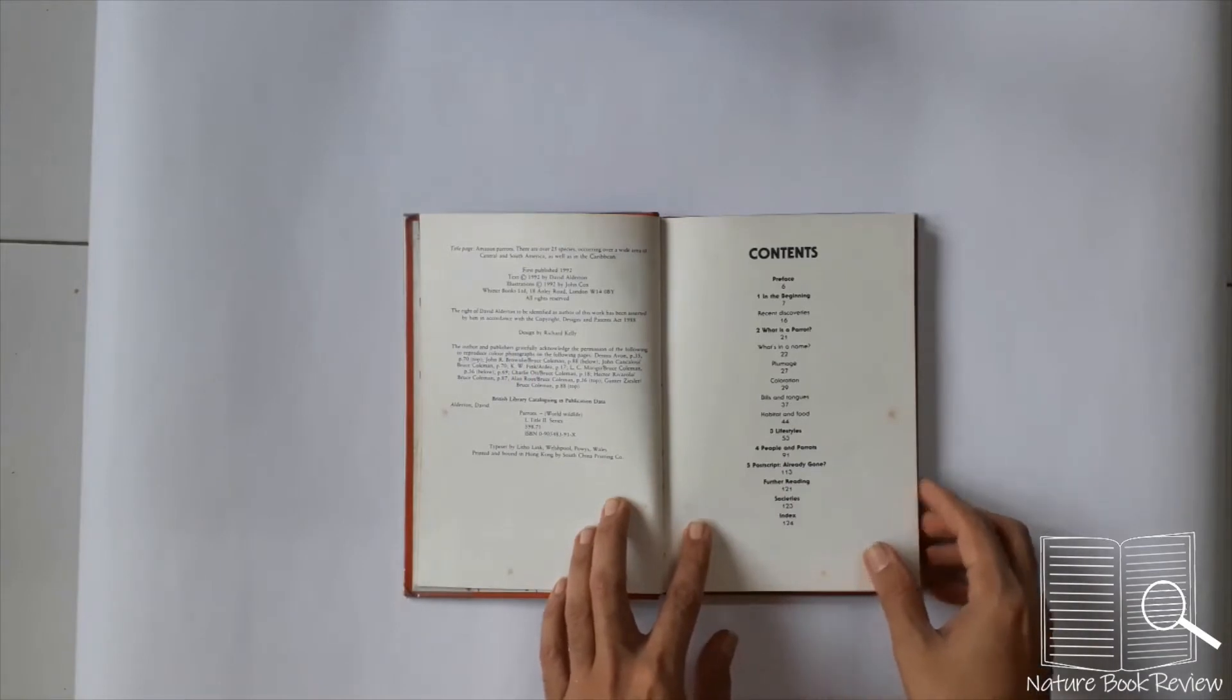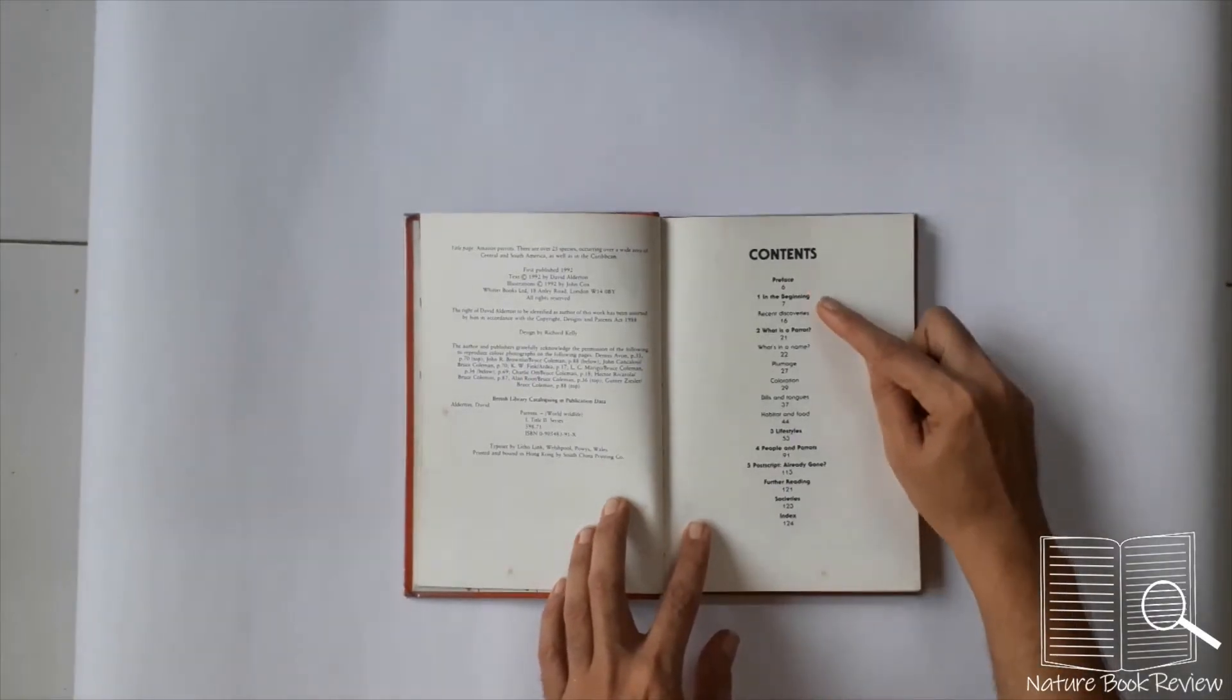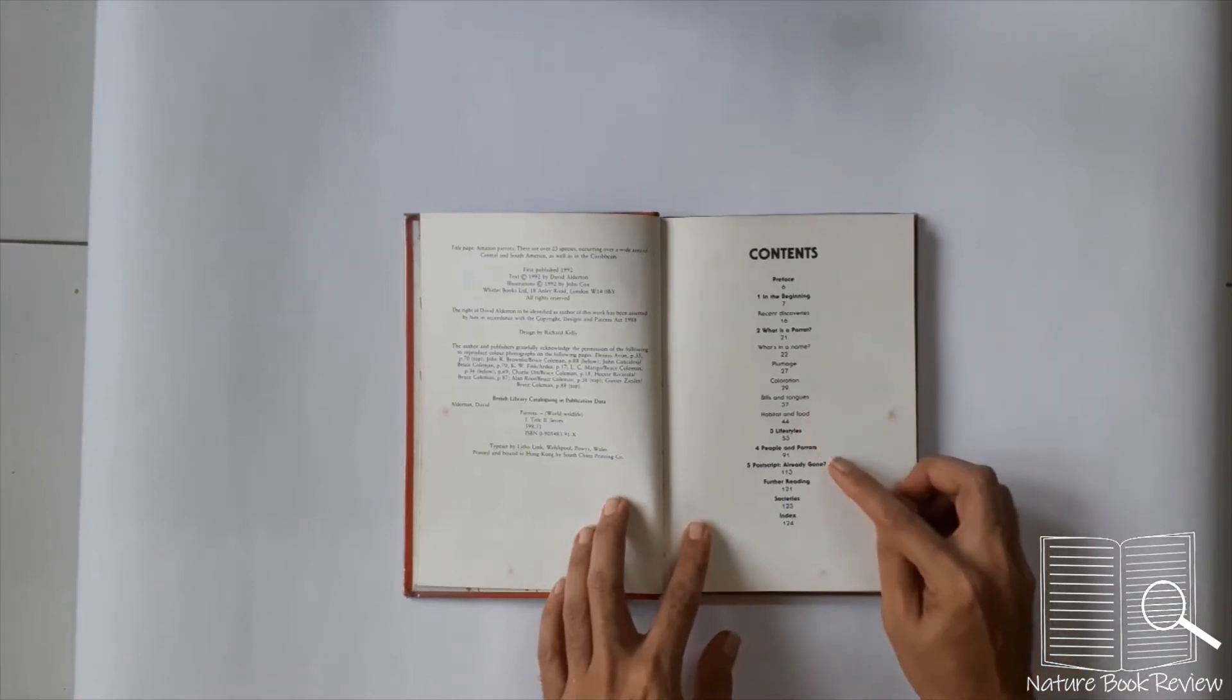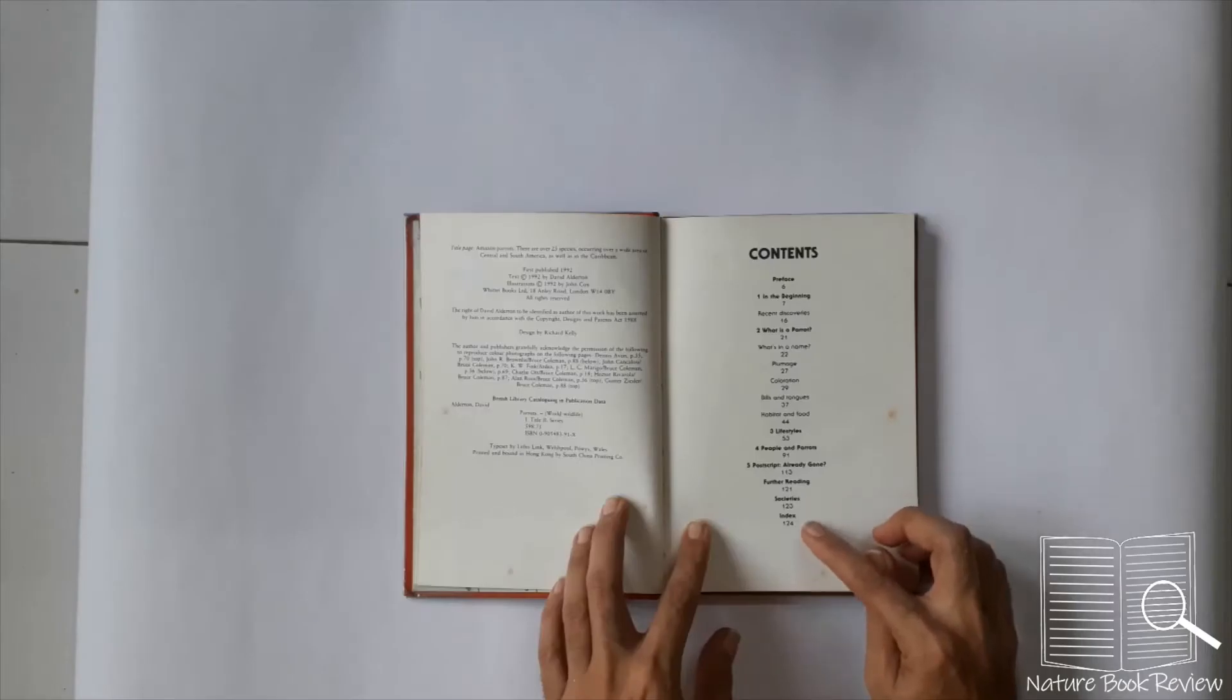What are the contents? Preface. In the beginning. What is a parrot? Then everything about the parrots in basics. Then lifestyles. People and parrots. Postscript - already gone. It is related to extinction of some of the species because of the pet trade. Then further reading, societies, and index.